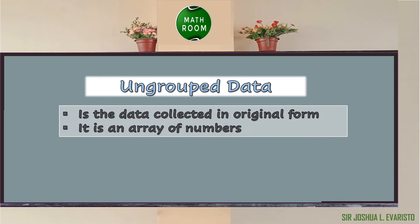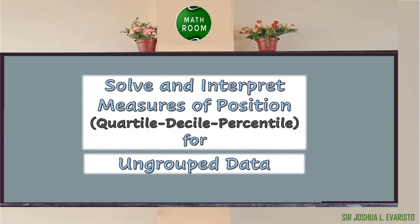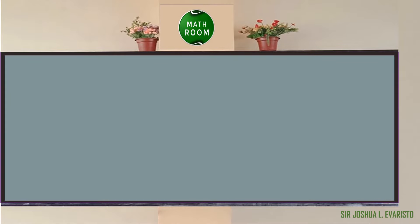Deciles divide the data set into 10 equal groups, and percentiles divide the data set into 100 equal groups. In addition, ungrouped data is the data collected in original form, or it is an array of numbers. In this video, we will learn how to solve and interpret measures of position such as quartile, decile, and percentile for ungrouped data.